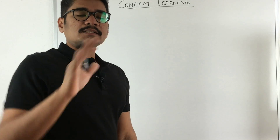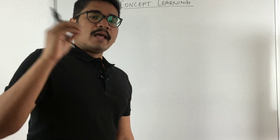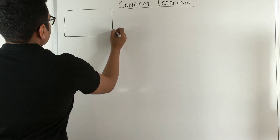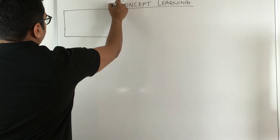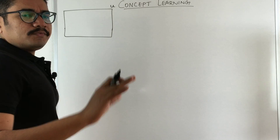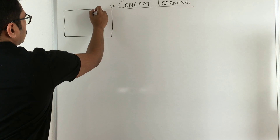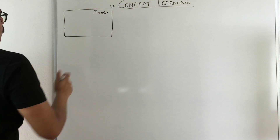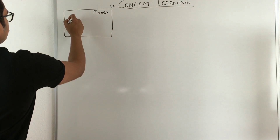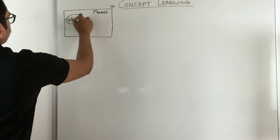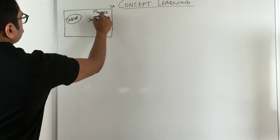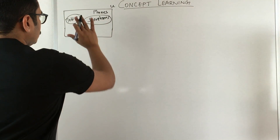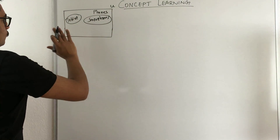We are living in this world, and in this universe there are many different objects along with many different concepts. Say this rectangle represents the universe we are living in. Inside this, I'll take a simple example — the concept of phones, that is your normal mobile phones. Now within phones we have different concepts like tablet phones and smartphones.